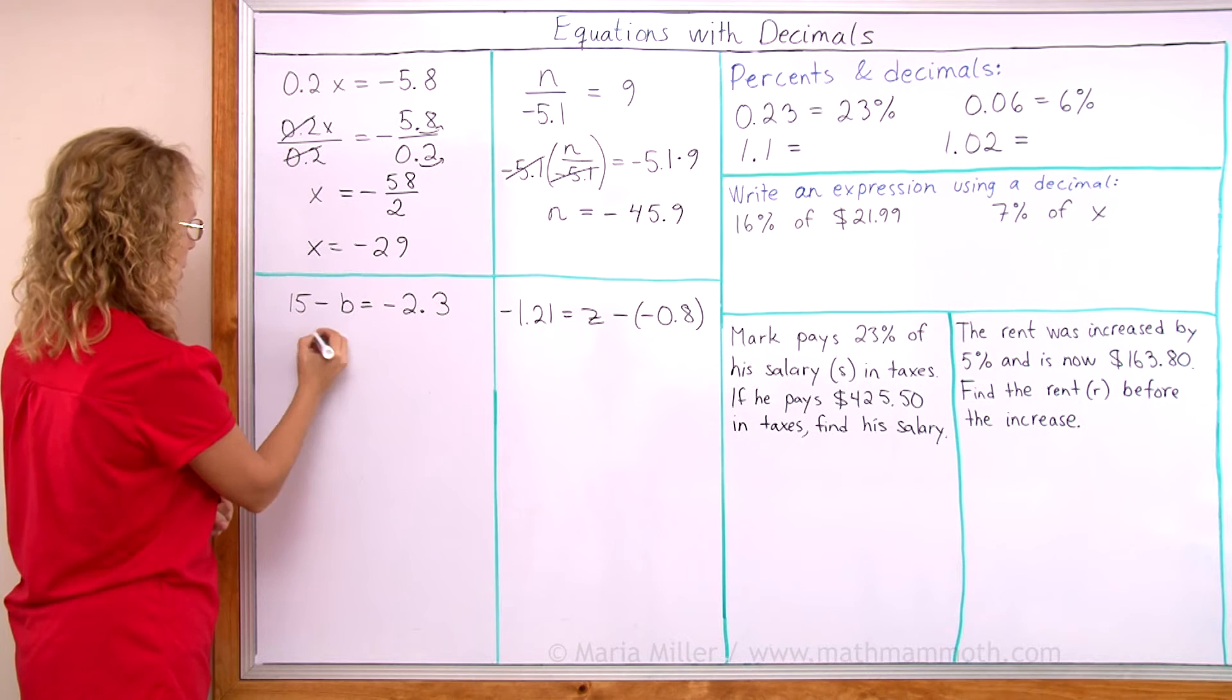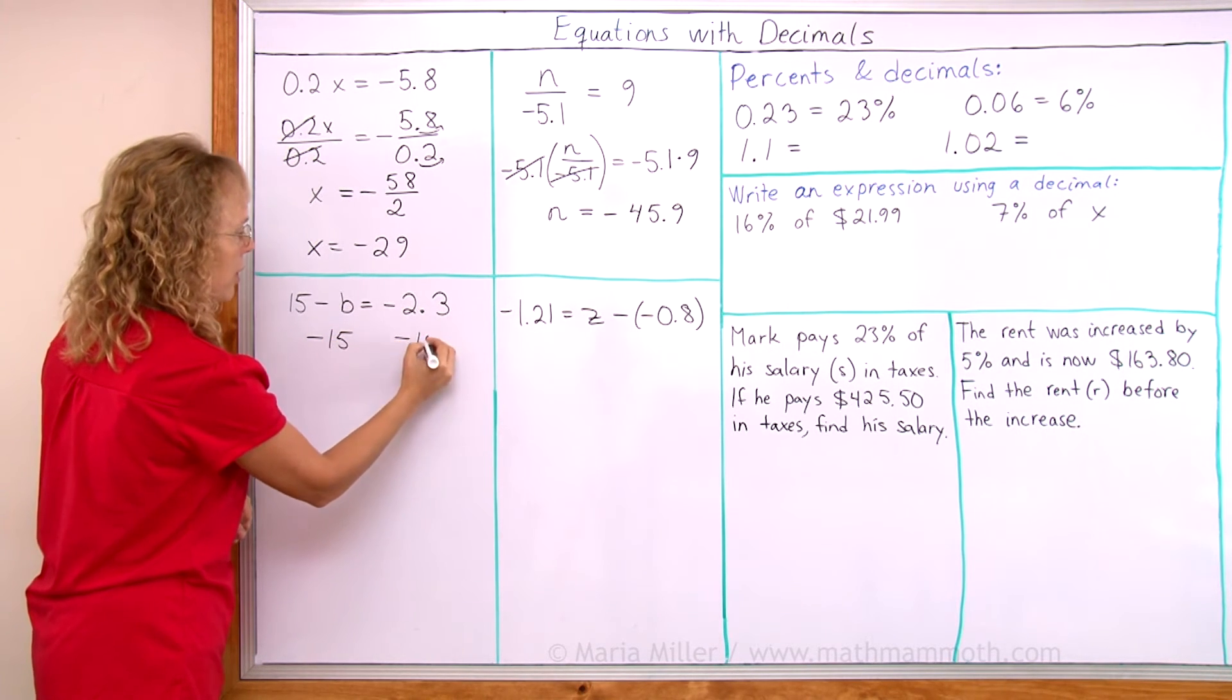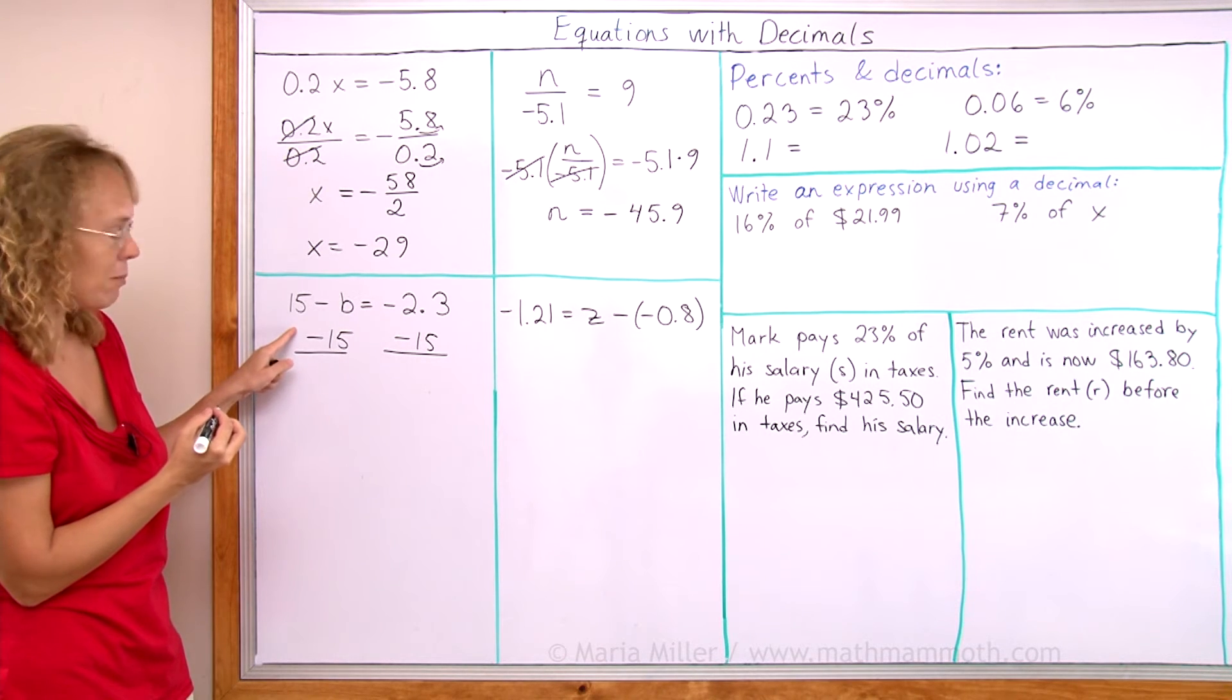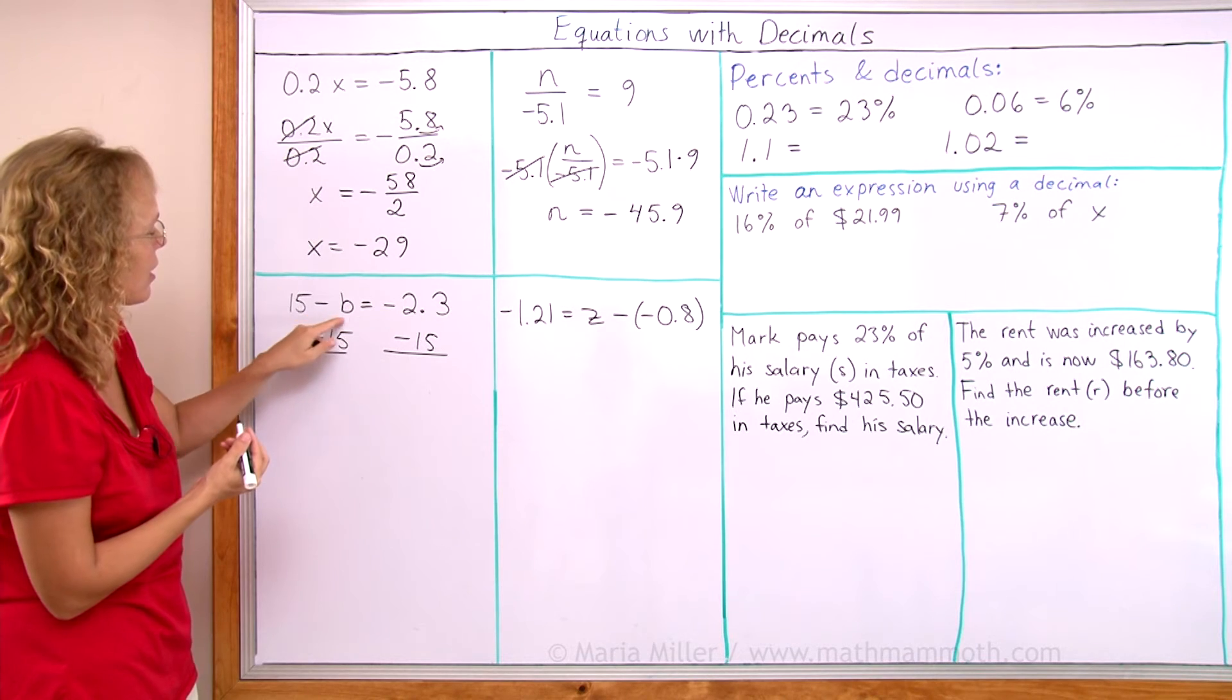So we get, let me write it here. Subtract 15, subtract 15 from both sides. And here 15 minus 15 of course leaves 0 or nothing. So we are left with this negative b.